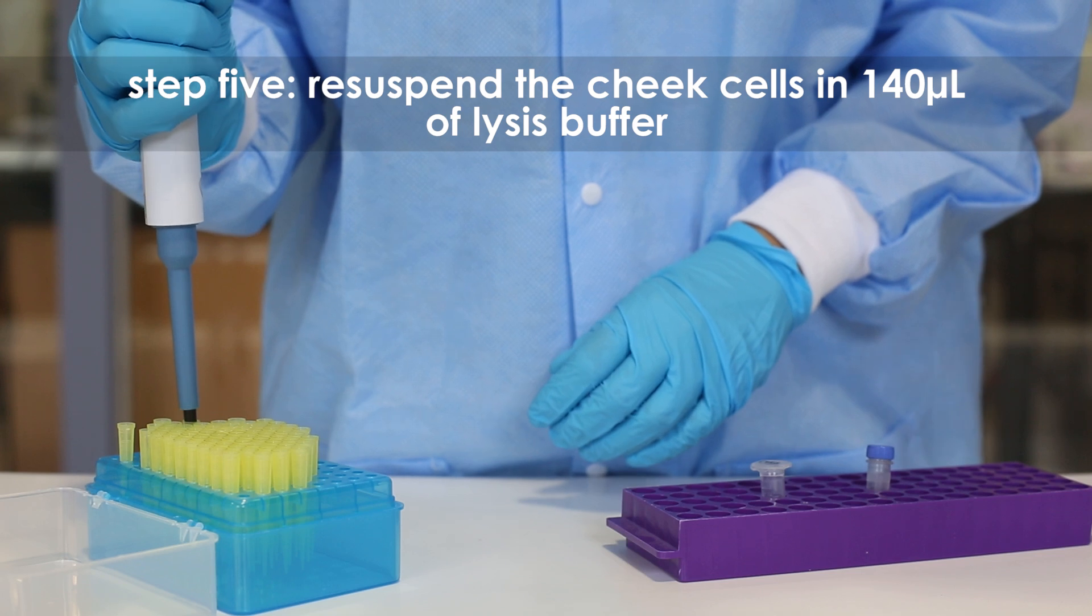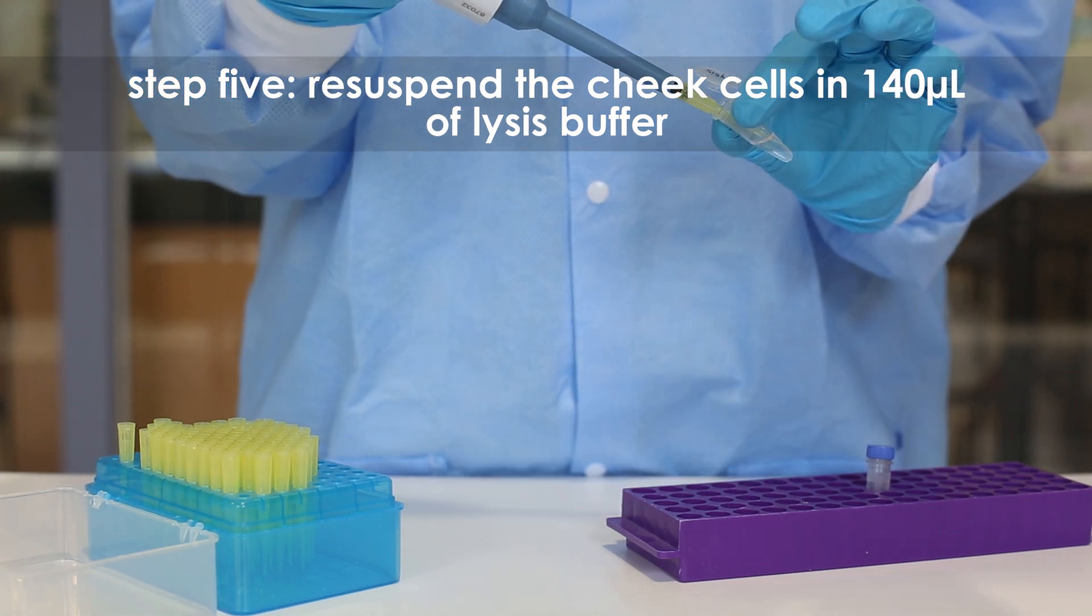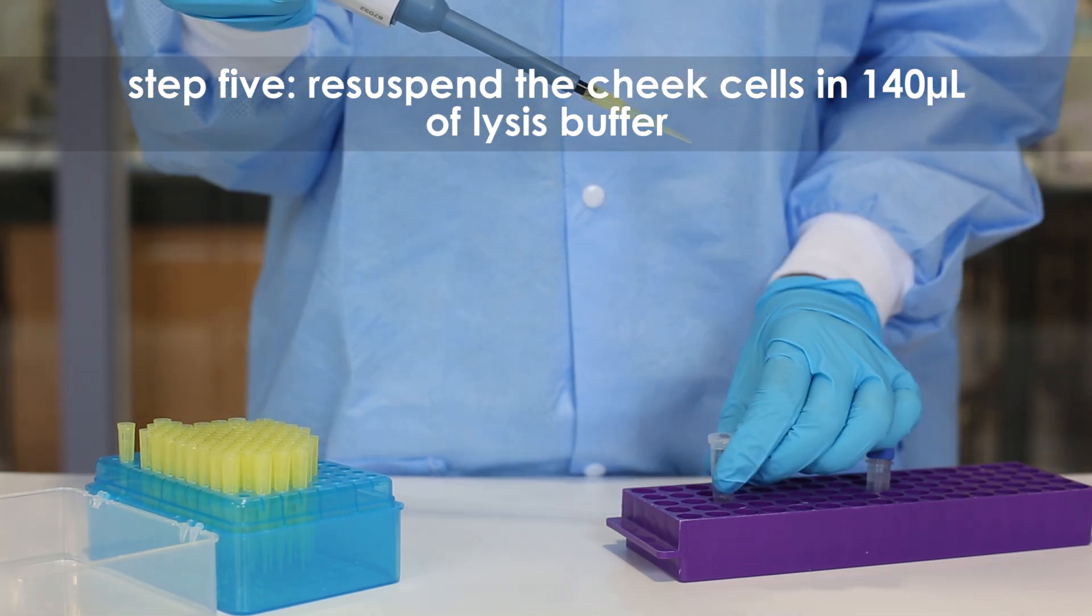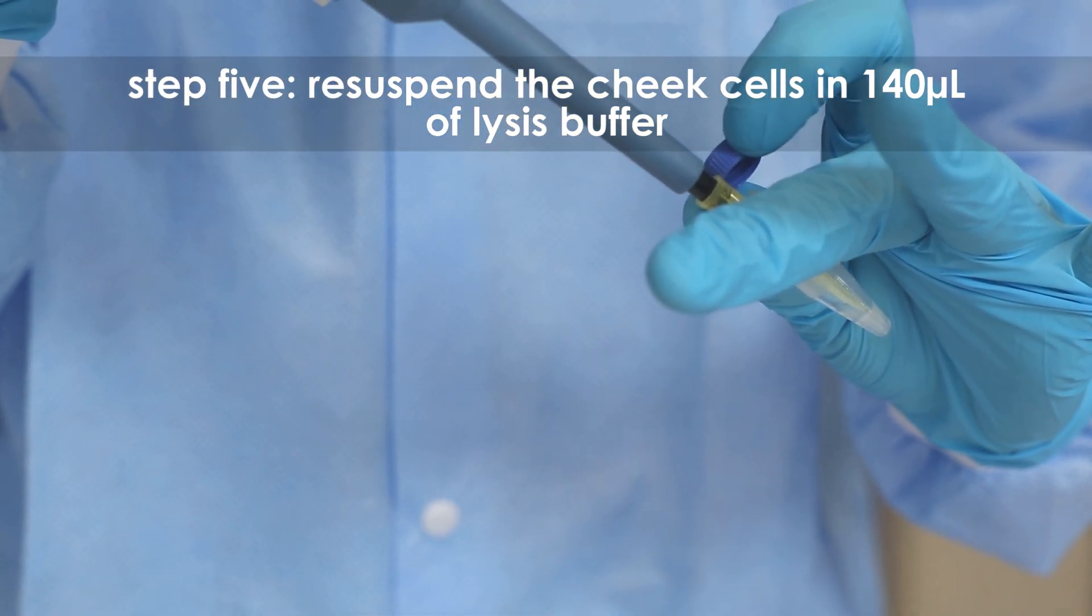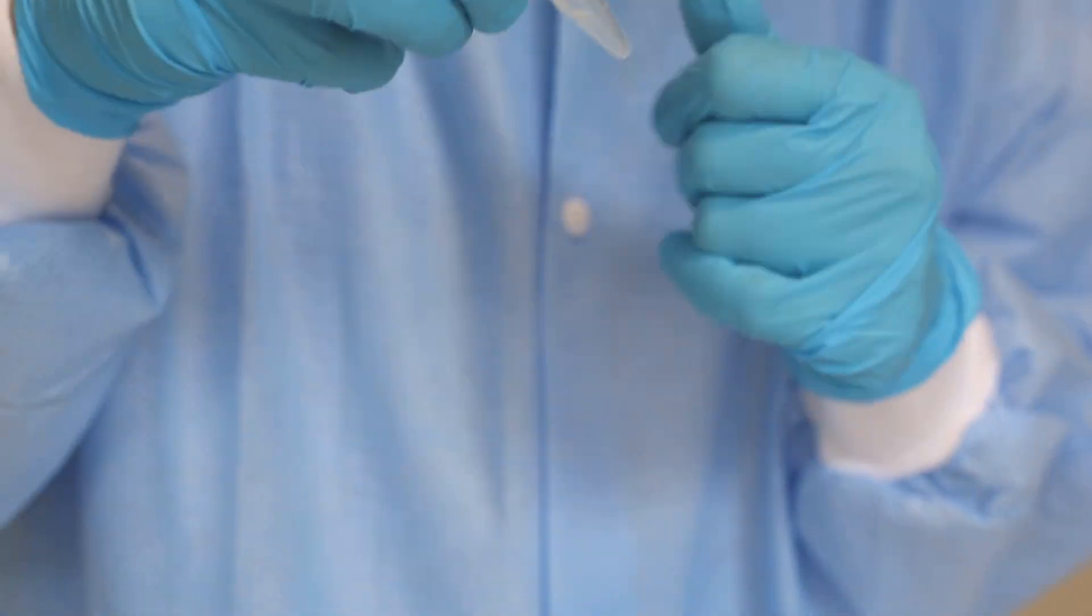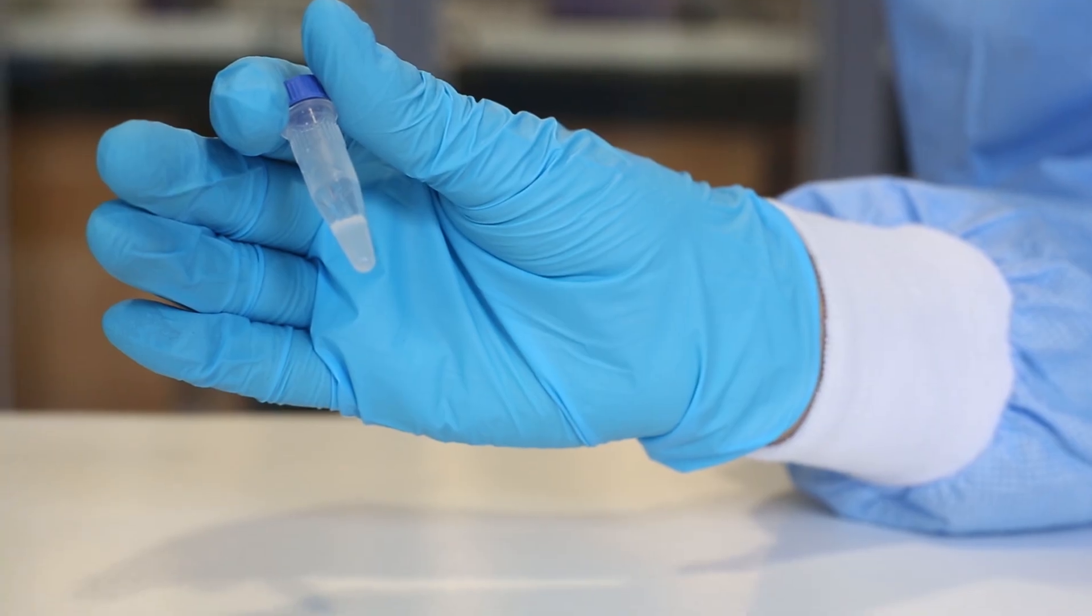Step 5: After you have a sufficient cell pellet, resuspend the cheek cells in 140 microliters of lysis buffer. Mix until no clumps of cells are visible. The cell suspension should look cloudy.